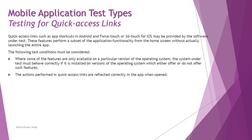Moving on to testing for quick access links, which is another important area. Quick access links — such as app shortcuts in Android and Force Touch or 3D Touch for iOS — may be provided by the software under test. This feature performs a subset of application functionality from the home screen itself, without actually launching the entire app.